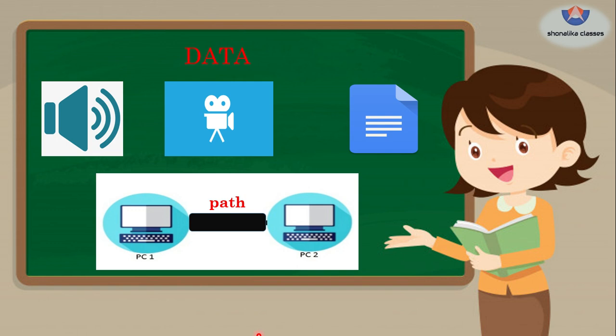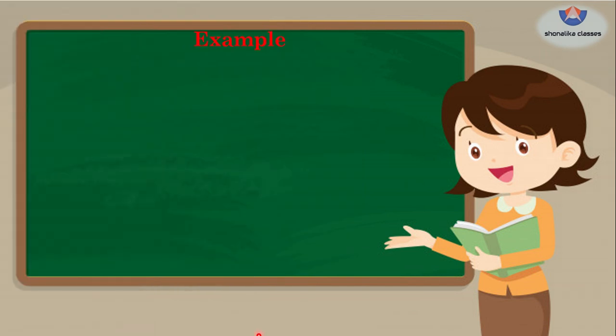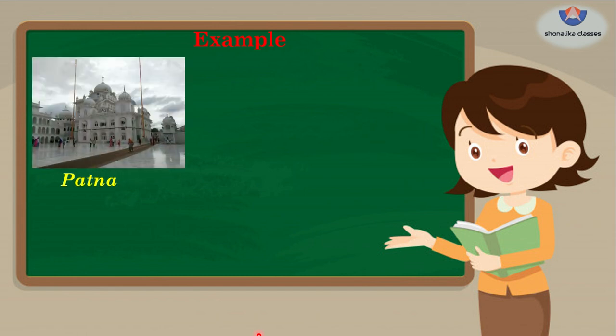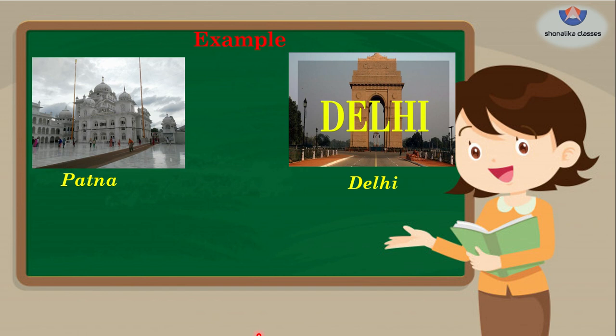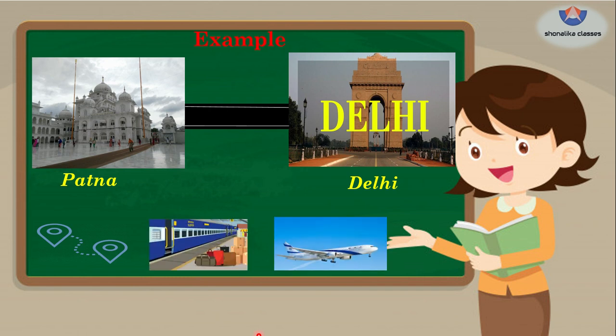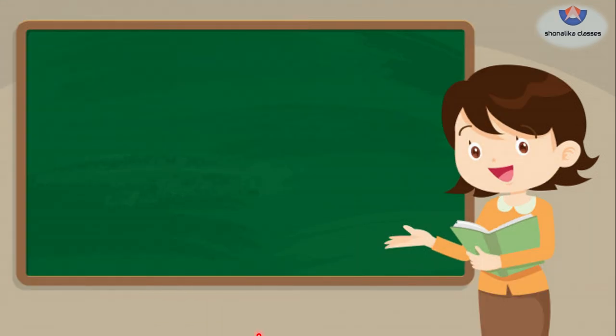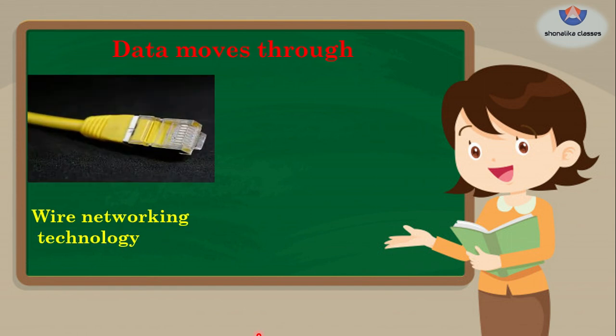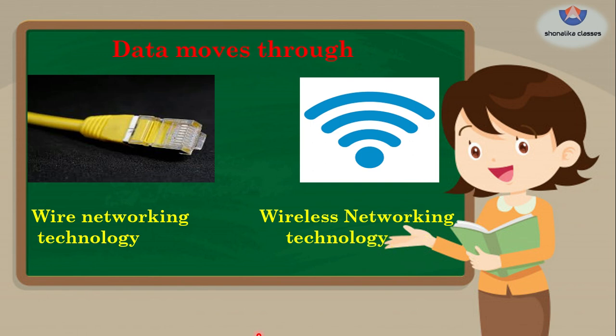If we are going from Patna to Delhi, we have a path which is our roadway. Similarly, data — whether a file, audio, or video — travels from PC1 to PC2. Just as we go to Delhi by road, train, or air, data also has two paths to move from one system to another: wired or wireless — that is, Wi-Fi.